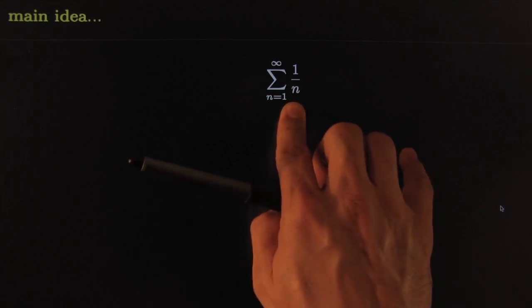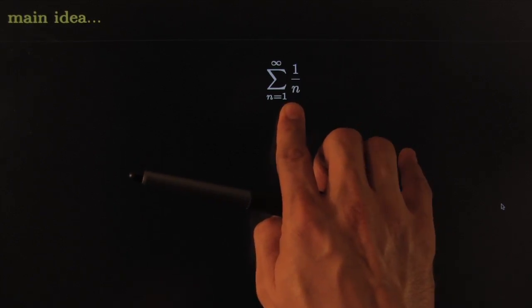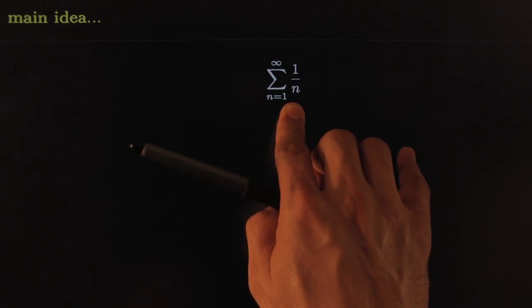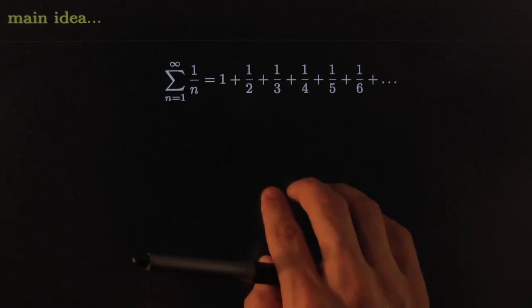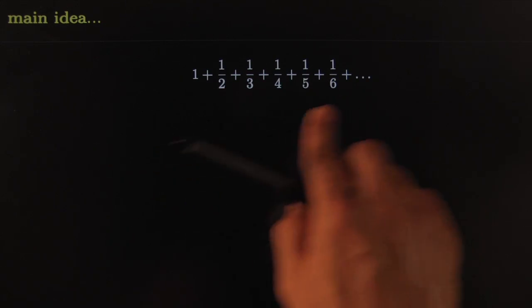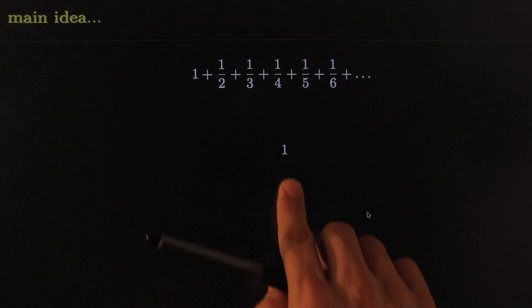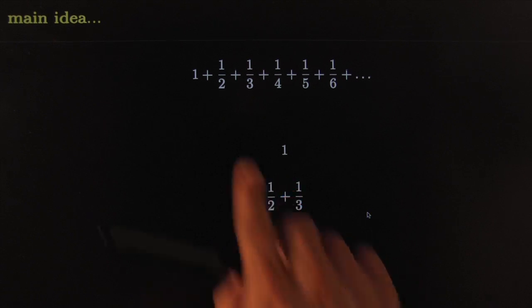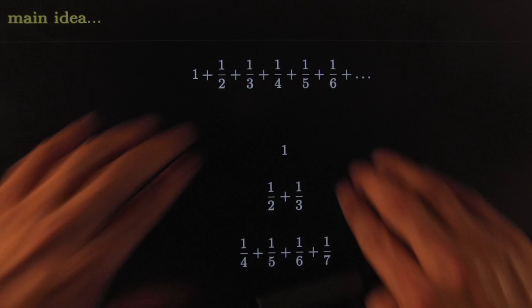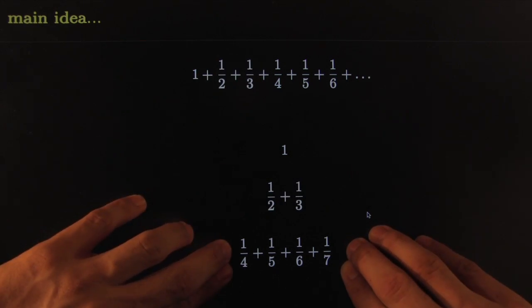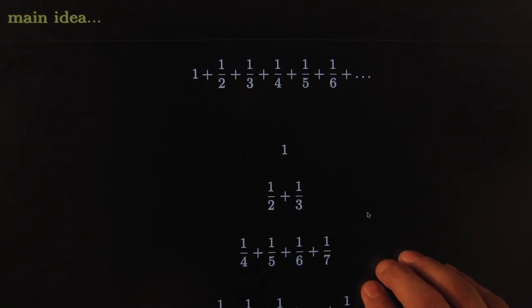It starts off with this series, the harmonic series. We know by the integral test it diverges. We can write it out. But here's where the magic starts. Suppose that instead of writing it that way, you write it in a different way. You write just a 1, then another line with the next two terms, the 2 and the 3, right below. Then you write the next terms right below, and so on.